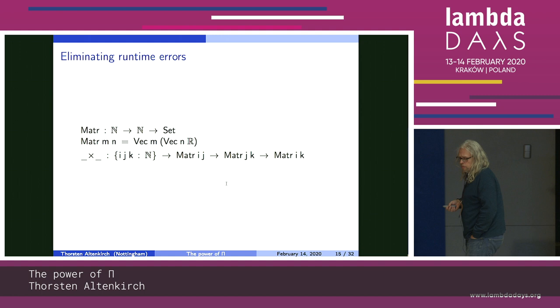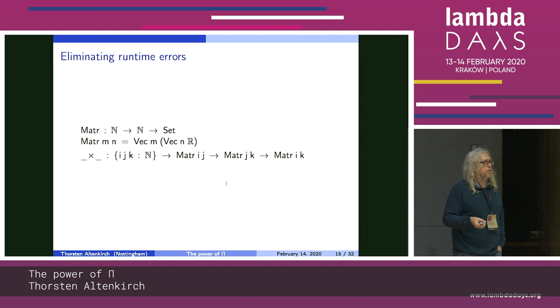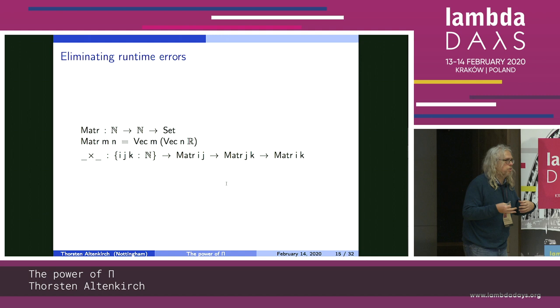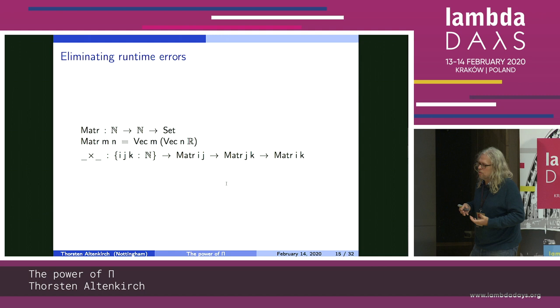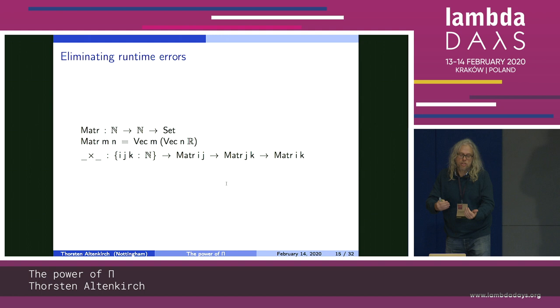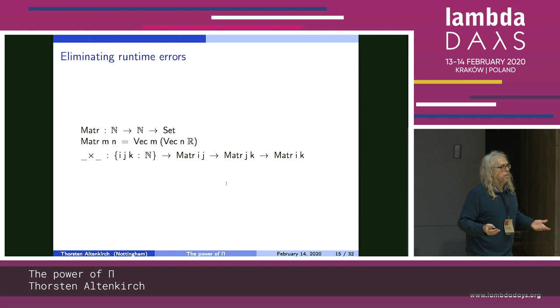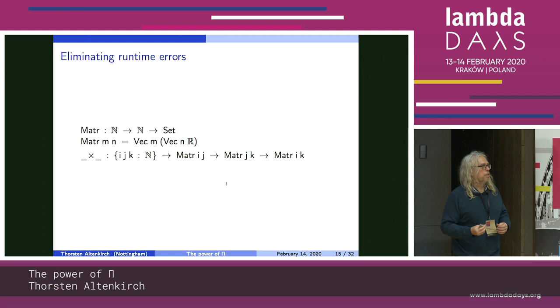Here is a very well-known application of dependent types: if we have a type of matrices, which we can define as a vector of vectors, and we want to implement matrix multiplication, then it's clear that the sizes of the matrices have to match. If they don't match, you get a runtime error. You want to statically rule out these runtime errors. In Haskell, if you're really honest, you would just get a maybe type — maybe you get a matrix, but if the sizes don't match, then you don't know what to do.